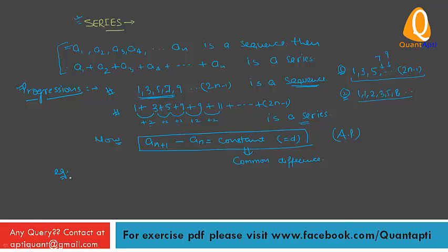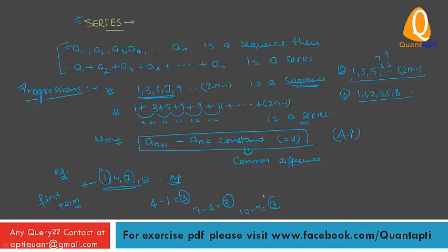For example, 1, 4, 7, 10, ... is an AP whose first term is 1. The common difference is the difference of a term and its previous term: 4-1=3, 7-4=3, 10-7=3. You can see 3 is common for all, that is the common difference d=3. Hence 1, 4, 7, 10 is an arithmetic progression.